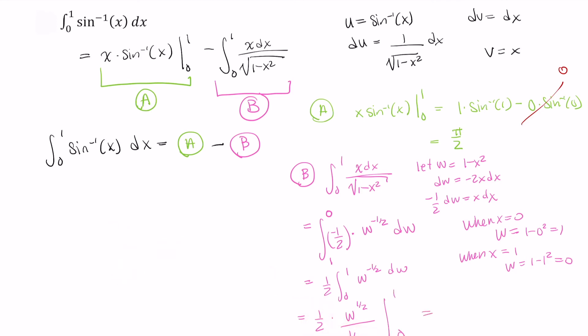And now we're evaluating this from 0 to 1, so we end up with 1 to the 1 half power minus 0 to the 1 half power, which is just 1.